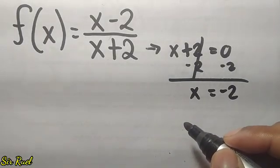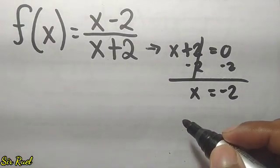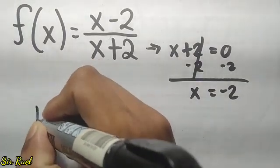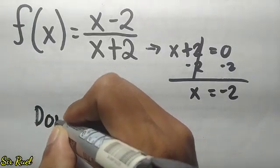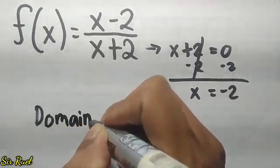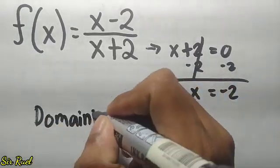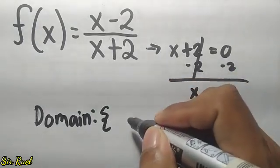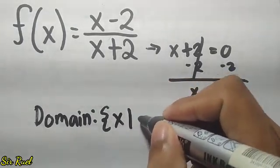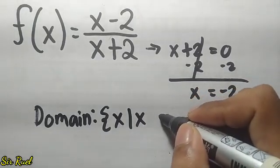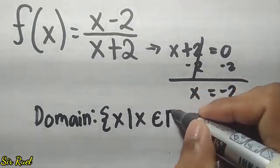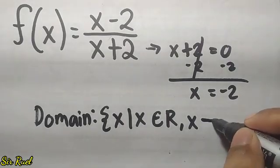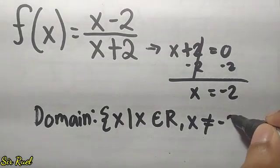In writing the answer, we use set-builder notation. So we write: domain equals the set of x such that x is an element of the real numbers where x is not equal to negative 2.